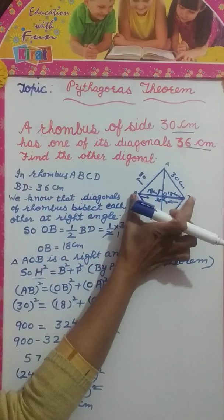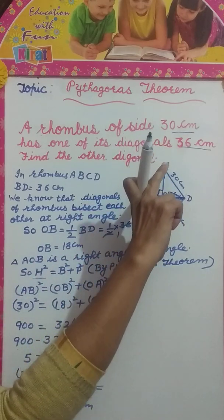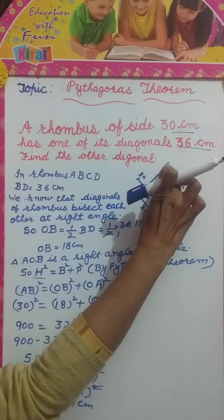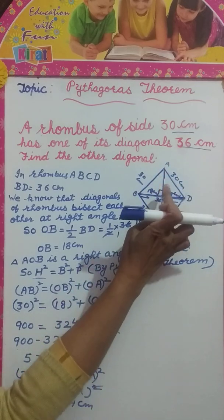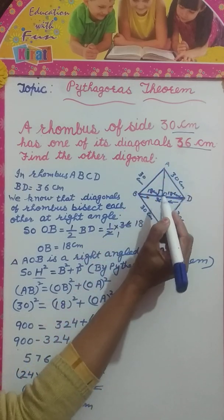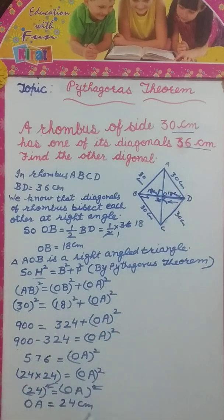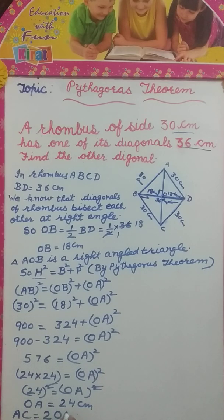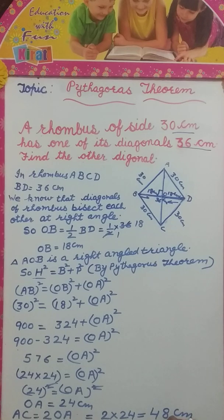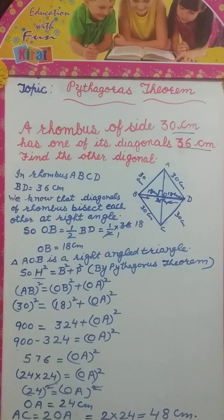Now I have to find the other diagonal. I know BD, so I need to find AC. AC will be equal to twice OA because the diagonal bisects here. OA is 24 cm, so AC = 2 × OA = 2 × 24 = 48 cm. Thank you.